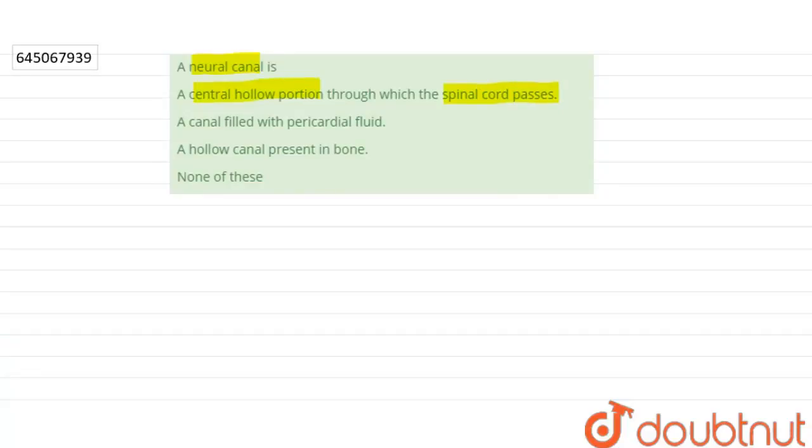So neural canal is a cavity or system of cavities in the vertebra embryo.